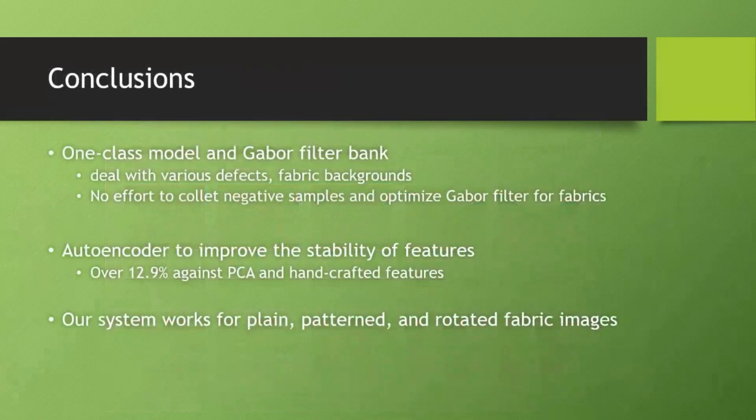In conclusion, we propose a one-class model for fabric defect detection. We utilize one-class classification and the Gabor filter bank to deal with different types of defects and different types of backgrounds, and we don't need to collect negative samples or optimize Gabor filters for certain types of fabrics. We also utilize a simple autoencoder to learn better feature representation, comparing it against handcraft and PCA methods. Lastly, we show that our system works for plain, patterned, and even rotated fabric images.